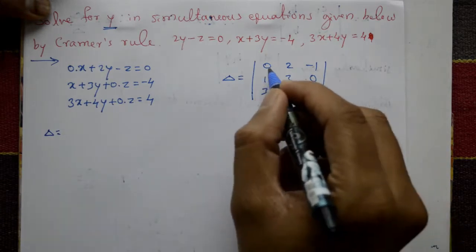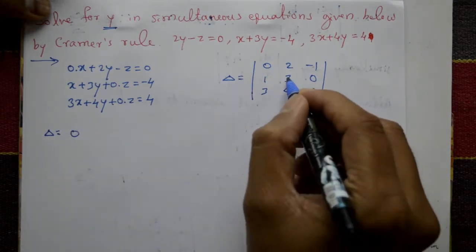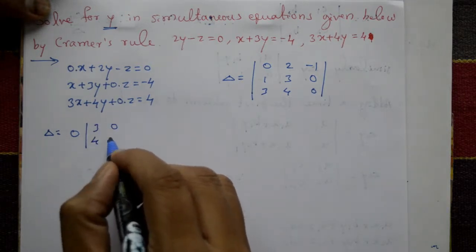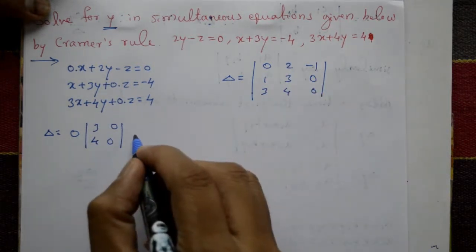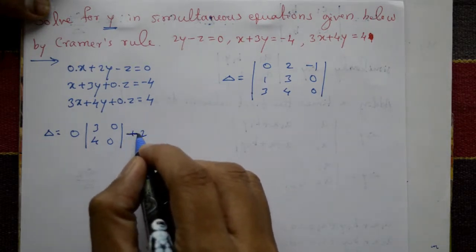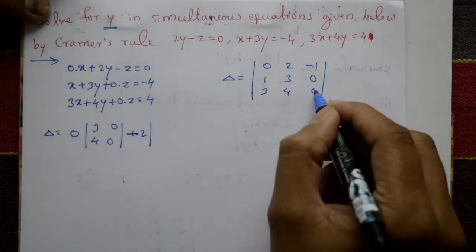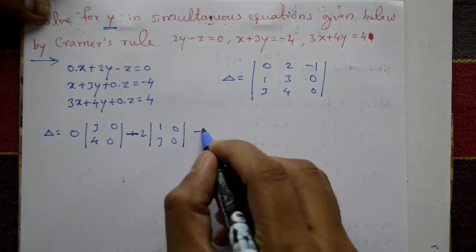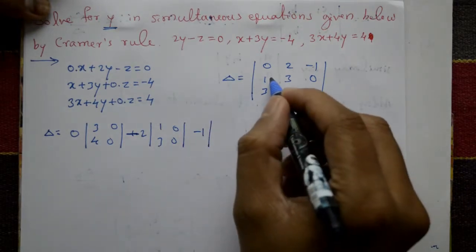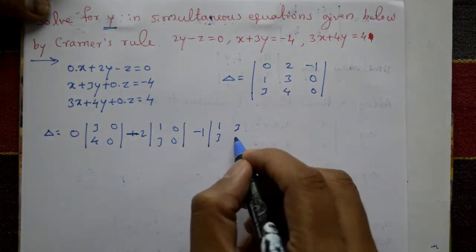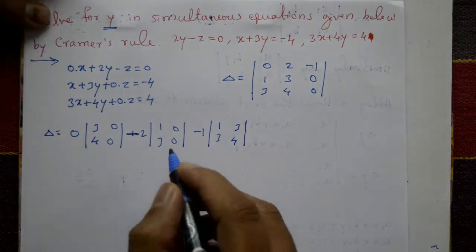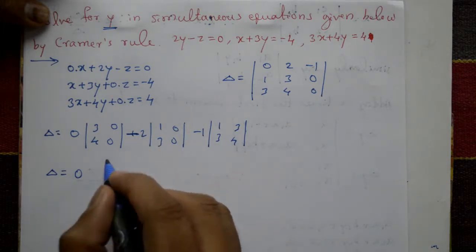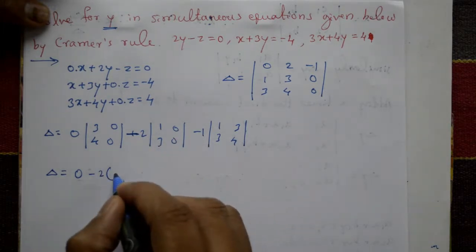Expand delta: 0 times the minor from elements 3, 0, 4, 0 — then minus 2 times the minor from elements 1, 0, 3, 0 — then minus 1 times the minor from elements 1, 3, 3, 4.